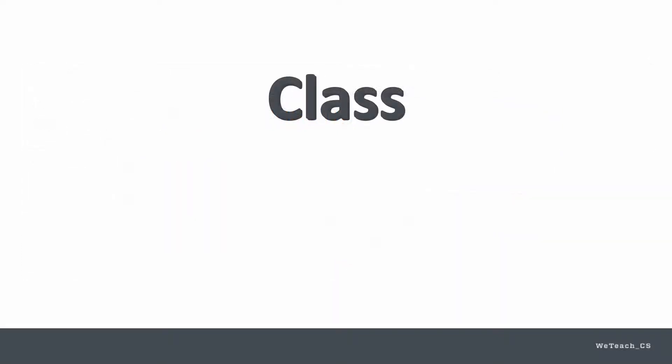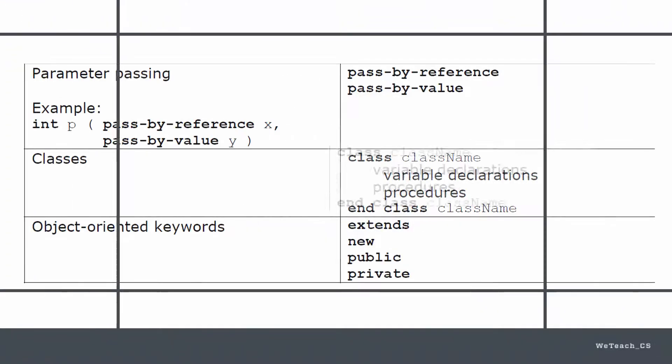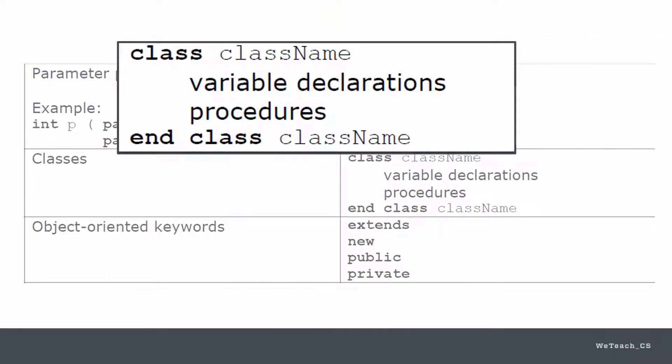In object-oriented languages, the class is the thing. Everything revolves around classes, which are the definitions for objects. Here you see the basic structure for class definitions, which in their most basic form contain two main aspects, the data and the processes or methods that affect the data.